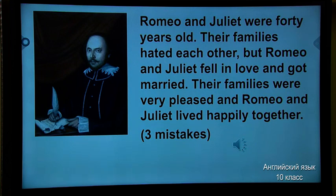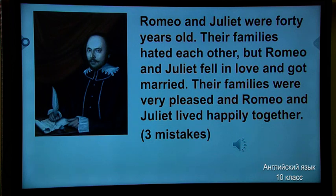Romeo and Juliet weren't 40 — they were 14 years old, very young. It's true that their families hated each other and the two young people fell in love and got married, but their families weren't pleased — they were very angry. And Romeo and Juliet didn't live happily together; they killed themselves. Thank you so much.